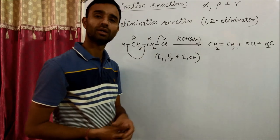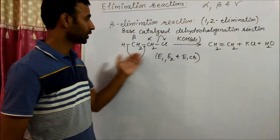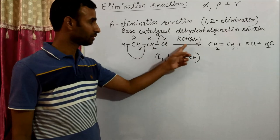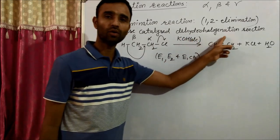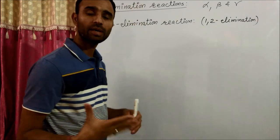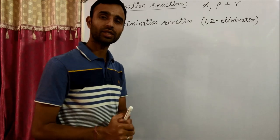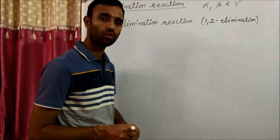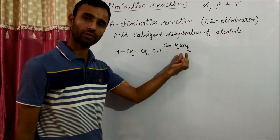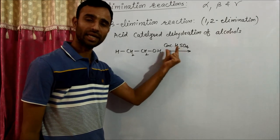We will discuss it in a separate video. This is base catalyzed dehydrohalogenation. Another example is acid catalyzed dehydration of alcohols. Concentrated H2SO4 is acting as dehydrating agent.